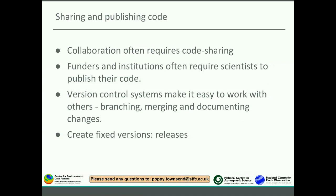Sharing and publishing code is another important aspect. Collaboration today often requires us to share code efficiently, and Git and GitHub make that really easy. When writing funding proposals or publications, funders and institutions often require us to publish our code. Version control systems make all this easier — they allow us to branch, merge different changes together, and document and commit our changes along the way. A key feature is that you can create fixed versions, tag them, and call them releases, just as software typically has release tags with information about what's changed between versions.